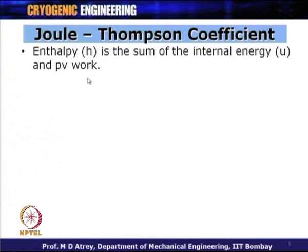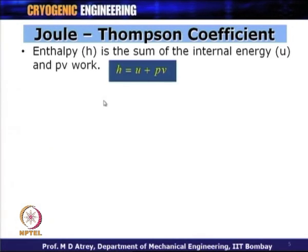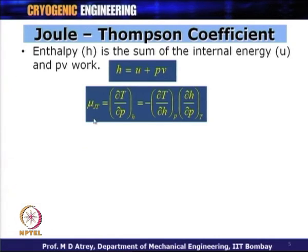Now let us understand what the Joule-Thompson coefficient is for the real gas. Starting with the definition of enthalpy — H equals U plus PV — mu_JT is defined as del T by del P at constant enthalpy. If I split that, it becomes del T by del H times del H by del P with a negative sign.